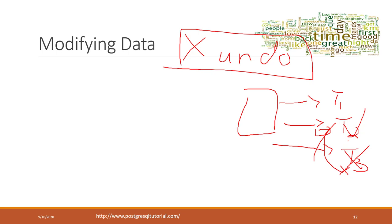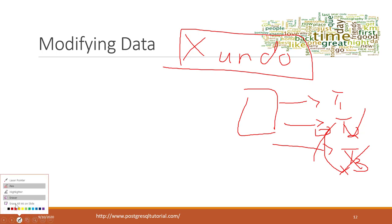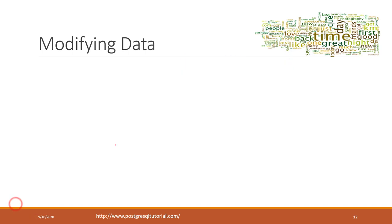Once you did something wrong in your database, there is no undo button. We will talk about three types of modifying your data. The first one is called INSERT, which means we can insert data into a table.